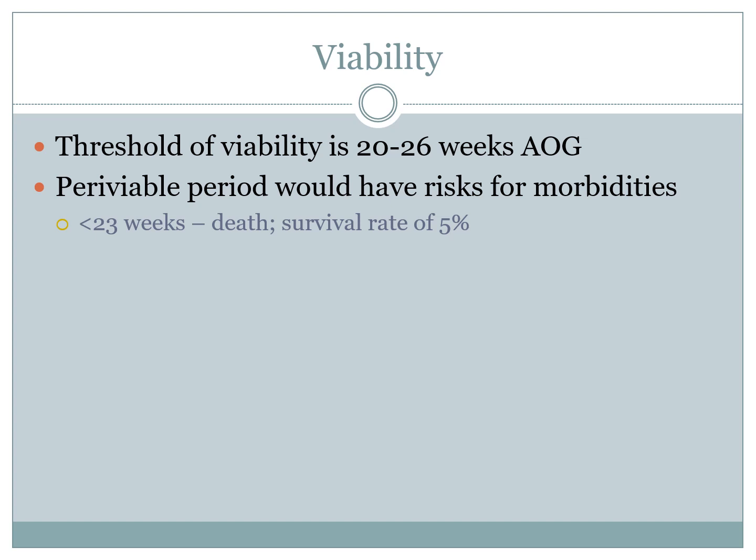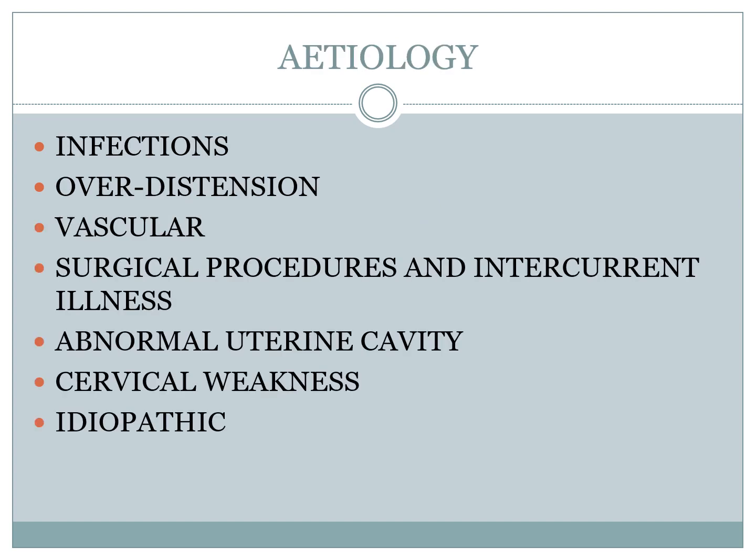The threshold of viability is 20 to 26 weeks age of gestation, and the periviable period carries risks for significant morbidities. A gestational age of less than 22 weeks means death, with a survival rate of just 5%. Preterm birth has different etiologies, primarily infections, over-distention such as in multiple pregnancies, vascular causes, different surgical procedures, abnormal uterine cavity, cervical weakness, or sometimes idiopathic.